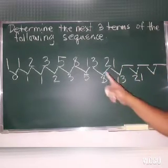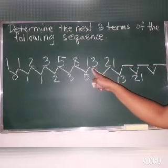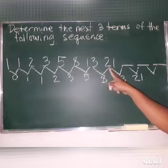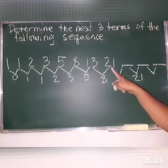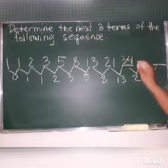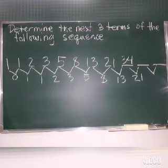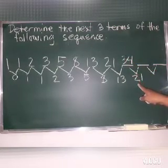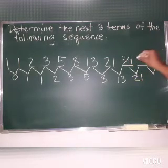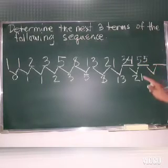What's next? So, 13 plus 8, 21. 21 plus 13, so 20, 34. Okay, next, 34 plus 21, so we have 4, 5, and then 3, 4, 5, 55.